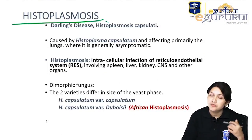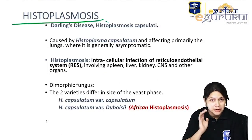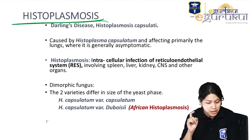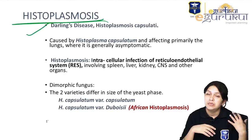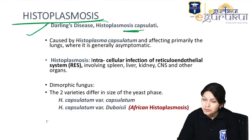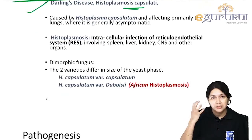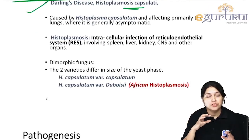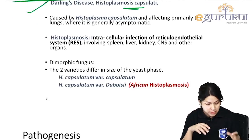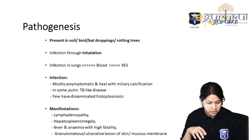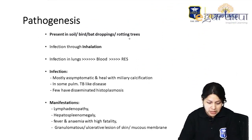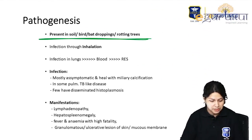Histoplasmosis is caused by Histoplasma capsulatum — the name has 'capsulatum' but it is a non-capsulated fungus. The disease is known as Darling's disease. We see intracellular yeast in the cells of the reticuloendothelial system. Histoplasma is characteristically associated with pigeon droppings or bird droppings.